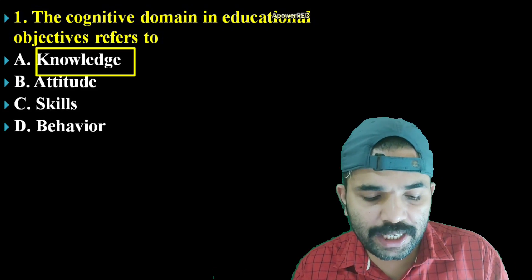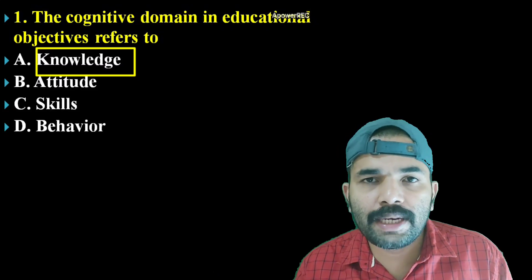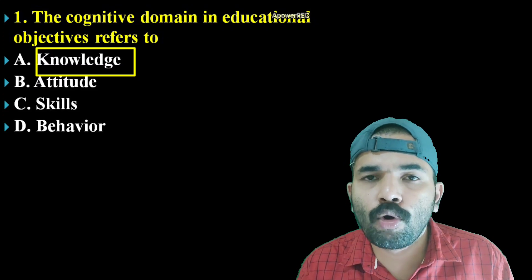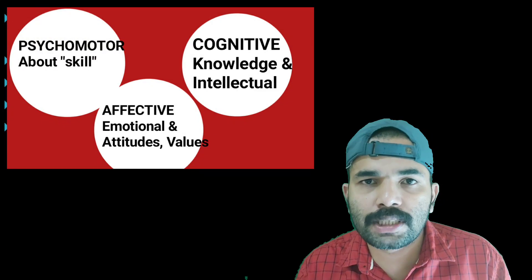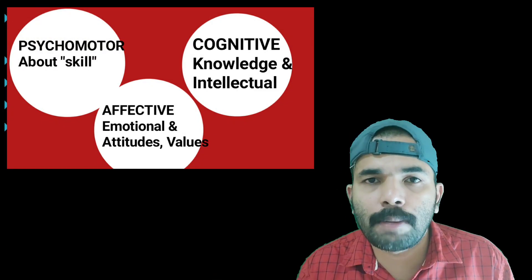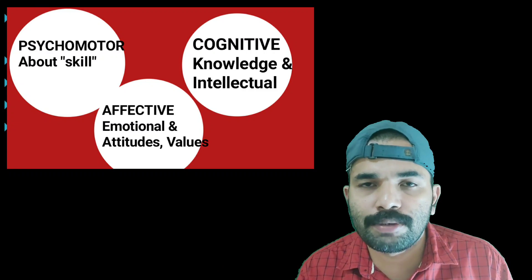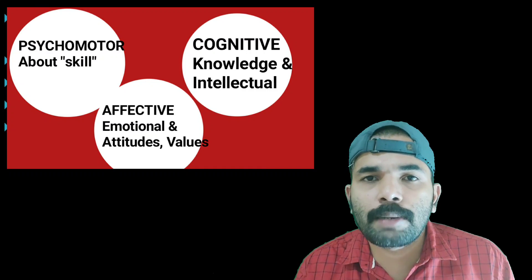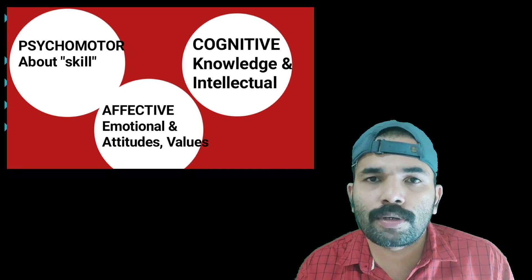The Cognitive Domain in Educational Objectives refers to Knowledge. This domain is part of Bloom's Taxonomy. There are three educational objectives in Bloom's Taxonomy: Cognitive, Psychomotor, and Affective. The cognitive domain deals with knowledge and intellectual development, including the development of psychomotor skills at different levels.